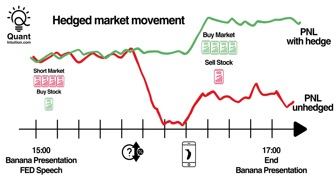One hedging example would be the following: at the beginning of both the Fed speech and the BananaPhone presentation, you buy the Banana stock and at the same time short the rest of the market. In red, we showcase your P&L — the profit and losses curve — without any hedge. In green, we add your new P&L for the hedged trade. When the Fed announcement happens, the overall market and also the Banana company declines. Since you shorted the market, your short position grows and offsets your losses on the Banana stock. As you can see, the green curve stays almost constant.